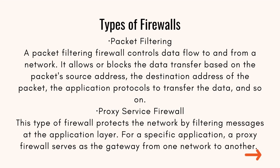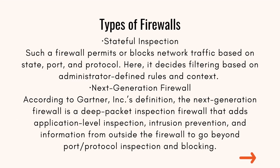Number 2: Proxy Service Firewall. This type of firewall protects the network by filtering messages at the application layer. For a specific application, a proxy firewall serves as the gateway from one network to another. Number 3: Stateful Inspection. Such a firewall permits or blocks network traffic based on state, port, and protocol. It decides filtering based on administrator-defined rules and context.